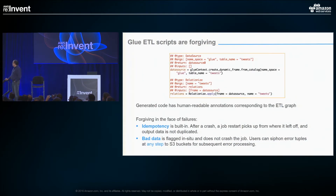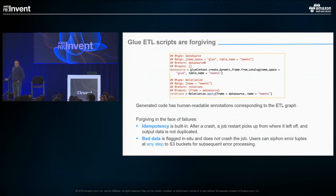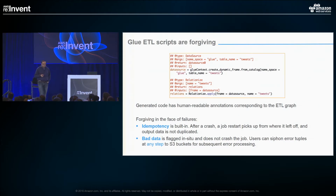We have human-readable annotations that correspond to the ETL graph. You can see here that there's a type, there's a return, there are inputs to it, and there are a bunch of arguments. That's basically all I need to generate a graph. In this case it's basically saying: make the object look like a data source element, and there's nothing that's a predecessor. So relatively straightforward.